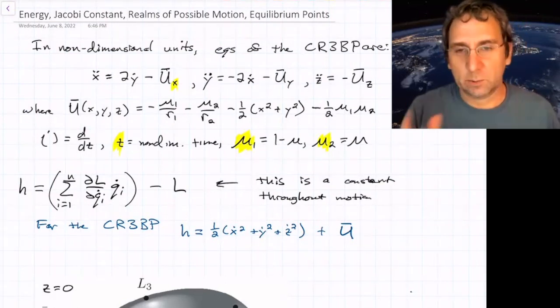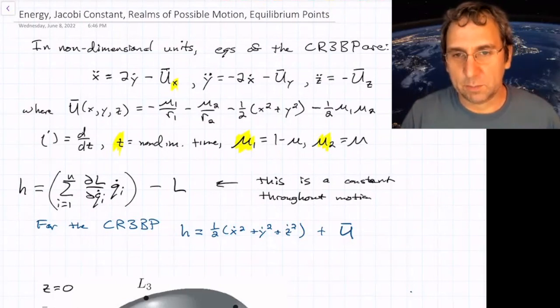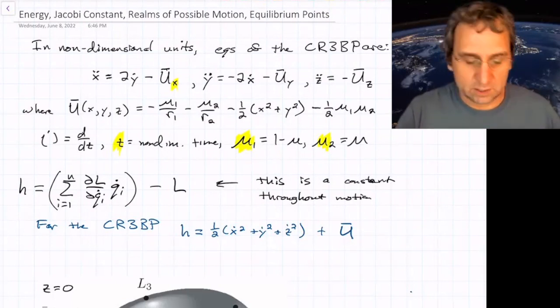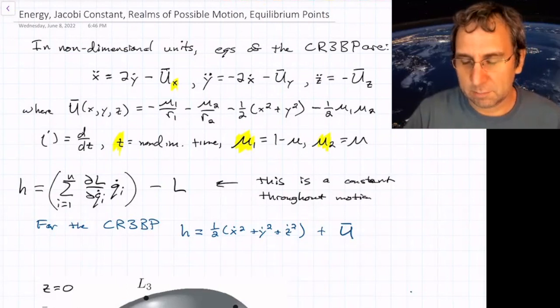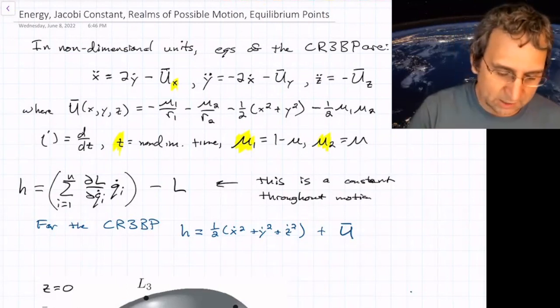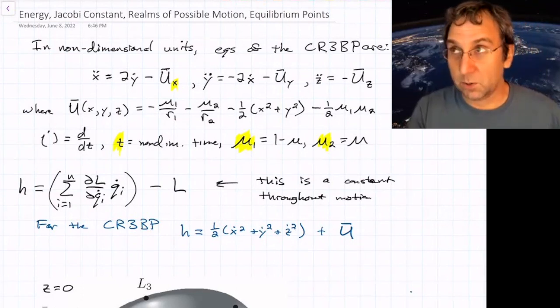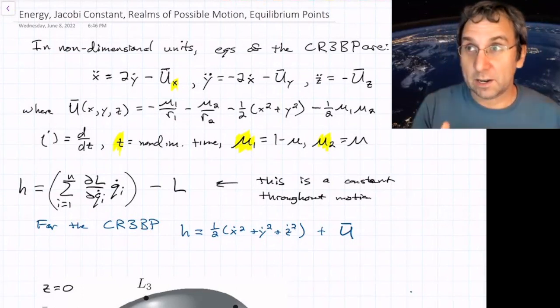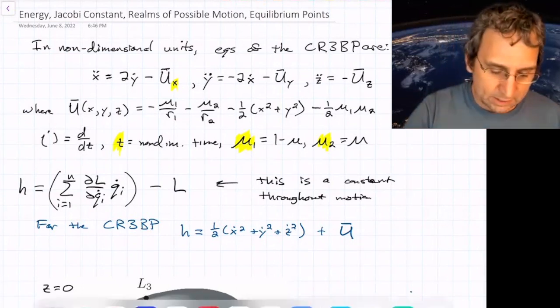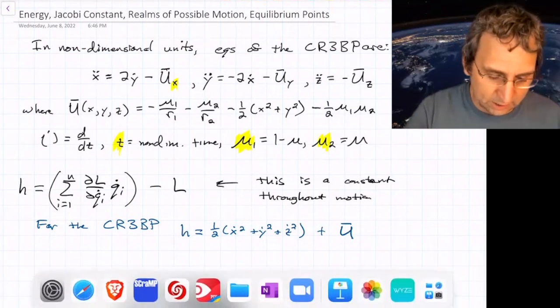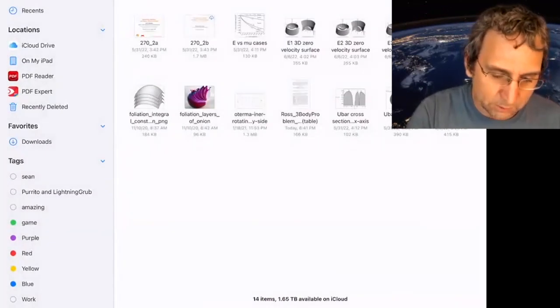And if you ever are concerned about how do I scale back? It's great that we've got these non-dimensional units. How do I scale back to the usual units? You multiply lengths by the semi-major axis of the primaries, and the time, this non-dimensional time, you would multiply it by the period over two pi.